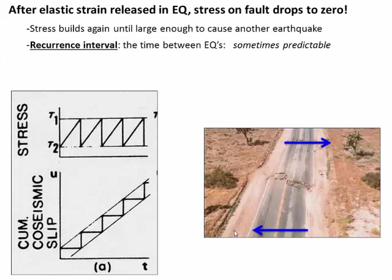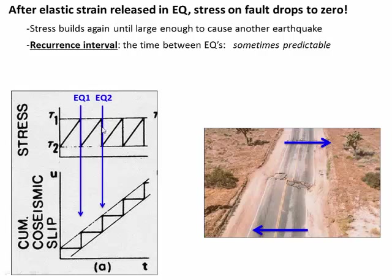Right after the earthquake, all of that compressed strain is released and the stress on the fault temporarily drops to zero. But of course, the plates are still moving, and now the fault is locked again, so the stresses start to build up again. We think about this as stress over time. Right after an earthquake, the stress starts to build up again, then an earthquake happens and the stress drops, the plates continue to move so stress builds again, then another earthquake happens and the stress drops — and so on, repeating.